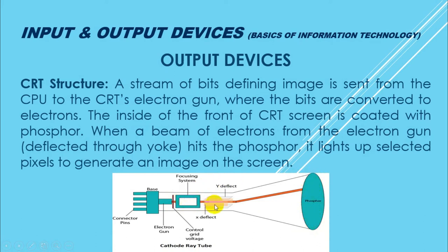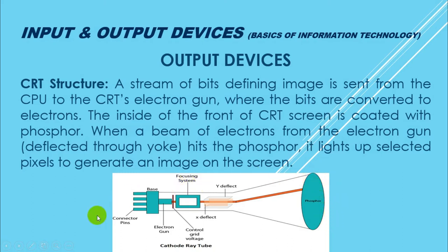Focusing system ka kaam yeh hai ke wo electron beam ko ek toh uski stream ke accordingly straight rakhe, aur doosra screen ke kis part pe kis waqt kaun si electron beam ke parts throw karne hain uski calculation bhi yahin hoti hai. Aage X-deflect aur Y-deflect hain jo electron beam ki deflection ko control kar rahe hain — screen pe decision lena hota hai ke kis jagah pe, kis waqt, kitni electron beam throw karni hai. Wahan se control hota hai aur jis waqt jo bhi beam jis part pe throw karni hoti hai woh throw hoti hai, aur phosphor accordingly light up hokar color scheme banata hai jo front end pe text, image ya picture ki surat mein dikhti hai.